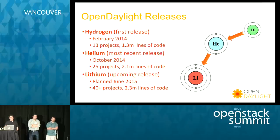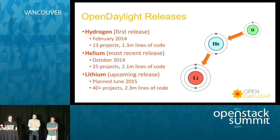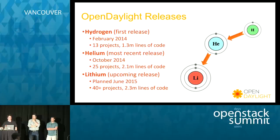We've had three different releases: Hydrogen, the first release in February 2014; Helium, the most recent release which came out about eight months ago; and next month Lithium is going to come out. Lithium is really more of a stability release — Helium was a huge step away from Hydrogen, and Lithium is more of a 'let's tweak things and make it actually work' release.